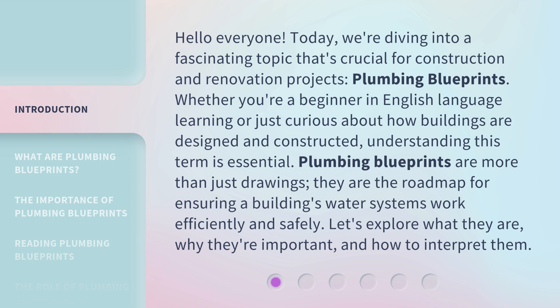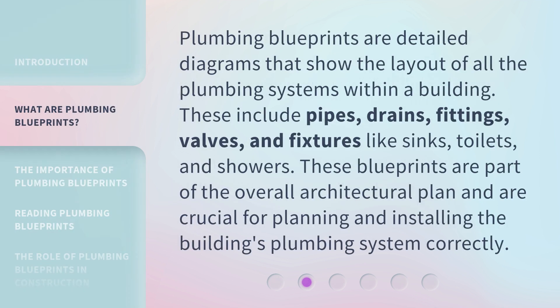Let's explore what they are, why they're important, and how to interpret them. Plumbing blueprints are detailed diagrams that show the layout of all the plumbing systems within a building. These include pipes, drains, fittings, valves, and fixtures like sinks, toilets, and showers. These blueprints are part of the overall architectural plan and are crucial for planning and installing the building's plumbing system correctly.